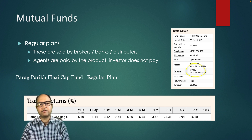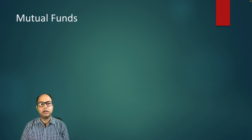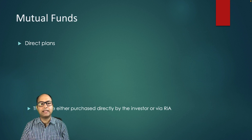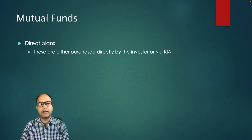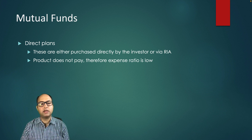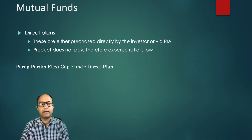Direct plans, as the name suggests, are directly served by the fund house to the investor, or through a Registered Investment Advisor (RIA). These products do not pay to agents or to the RIA, and that's why the expense ratio is low. Parag Parikh Flexi Cap Fund direct plan has a five-year return of 20.9 percent.